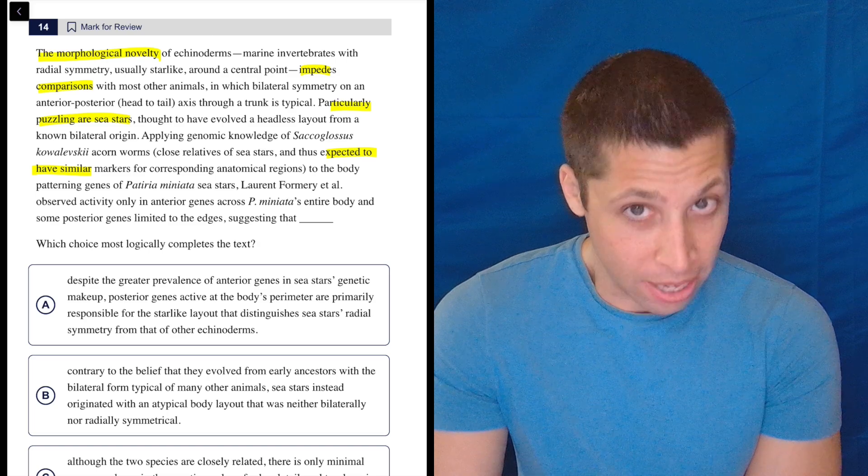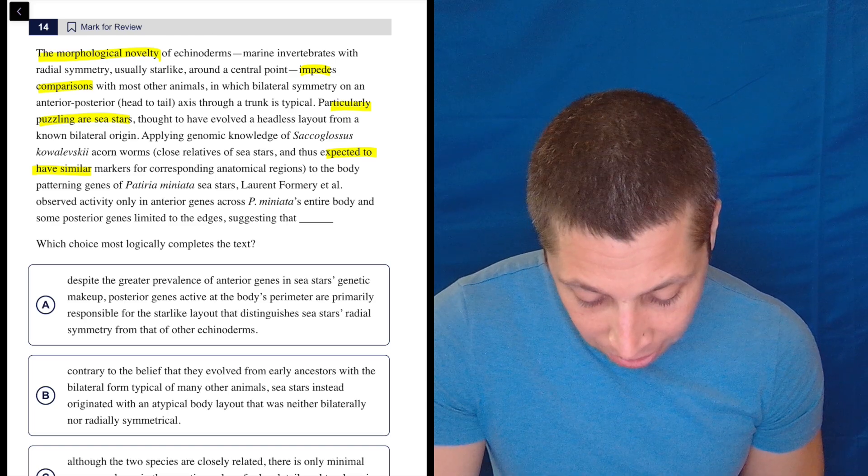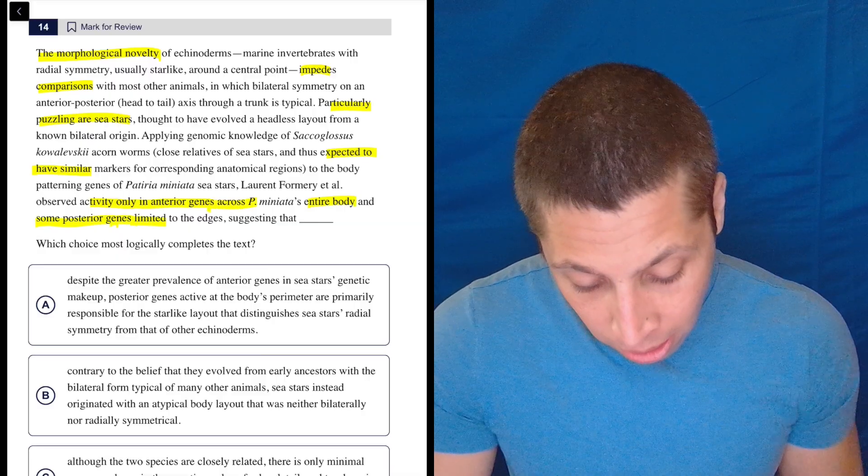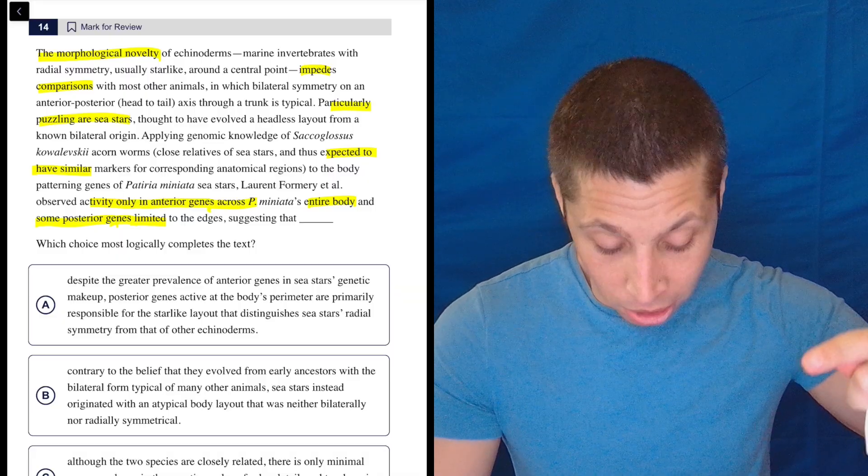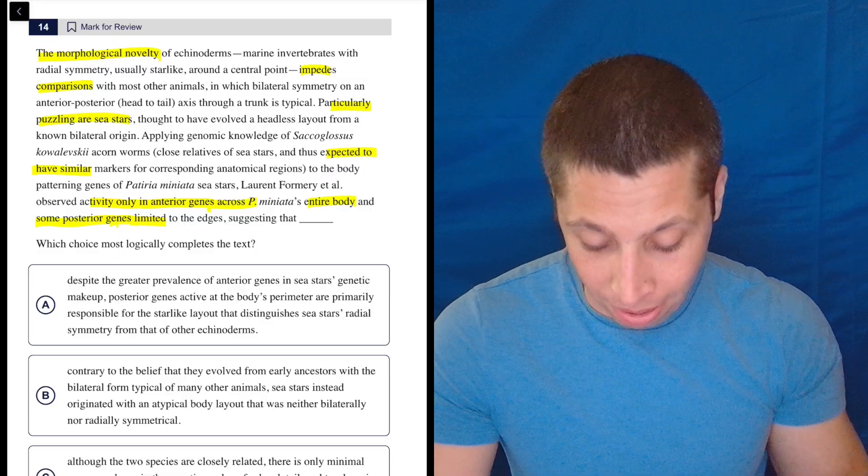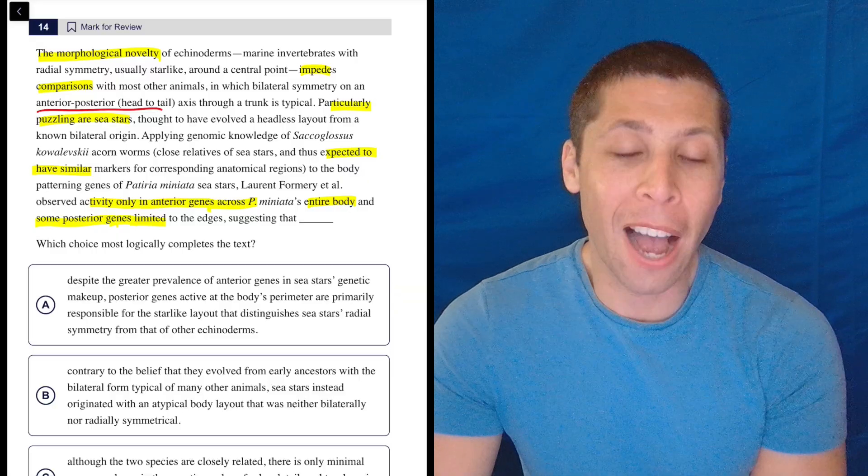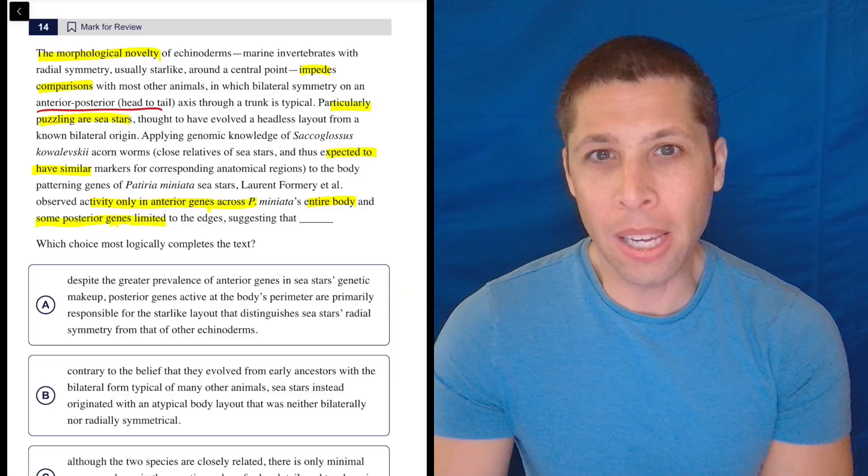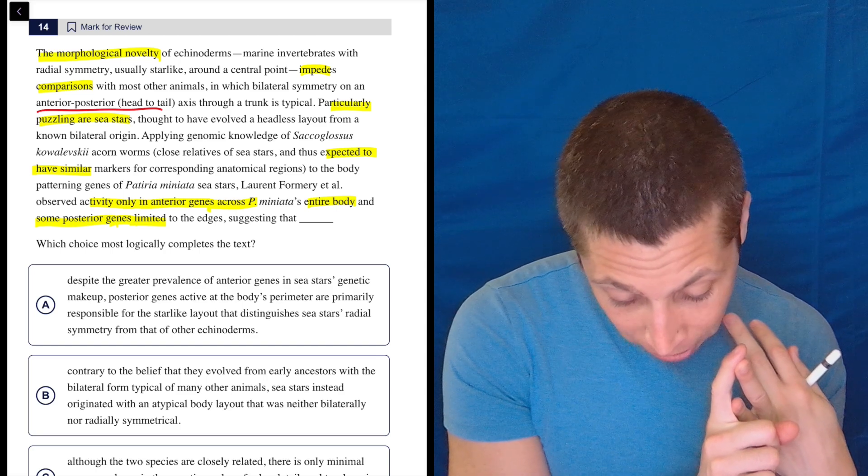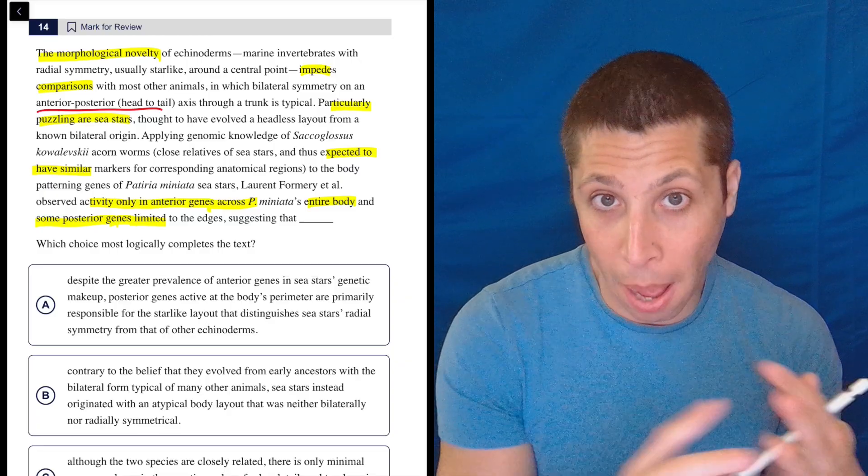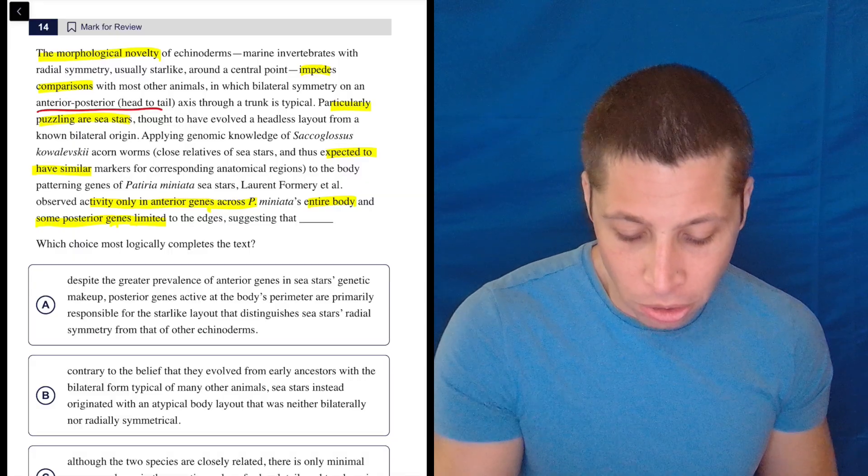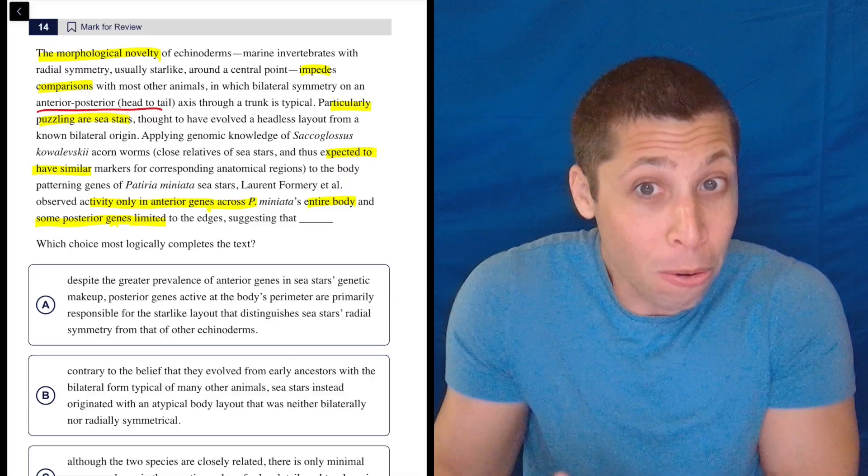Okay, well, they tell me what I need to know, right? They're literally giving it to me, right? There's activity only in the anterior genes across the entire body, and some posterior genes limited to the edges. So my dumb summary is that it's really important for the anterior and very not important for the posterior. But most of you're going to be like, anterior, posterior, what the heck is that? Well, they told us, right? So this is how a lot of these things work, is there are words you need to know to just be good at reading generally, right? Words like impede, novelty. I would say those two are the big ones. But then we have words that are much more specific to the topic of the passage, and those are words that I don't know either. But if I need to know them, they will explain them to me. So anterior, posterior, head and tail, guys, you got to know those words, right? So there you go.